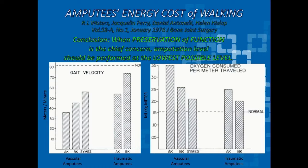Whether you're a vascular amputee or traumatic amputee, gait velocity decreases and oxygen consumed per meter walked increases. So the higher the level of amputation, the more oxygen consumption, the harder it is physiologically on the heart, and the slower the walking pace. This study looked at controls in the third through seventh decade of life, which is unique compared to other gait studies that focused on more traumatic amputees, like those studies out of Turkey.